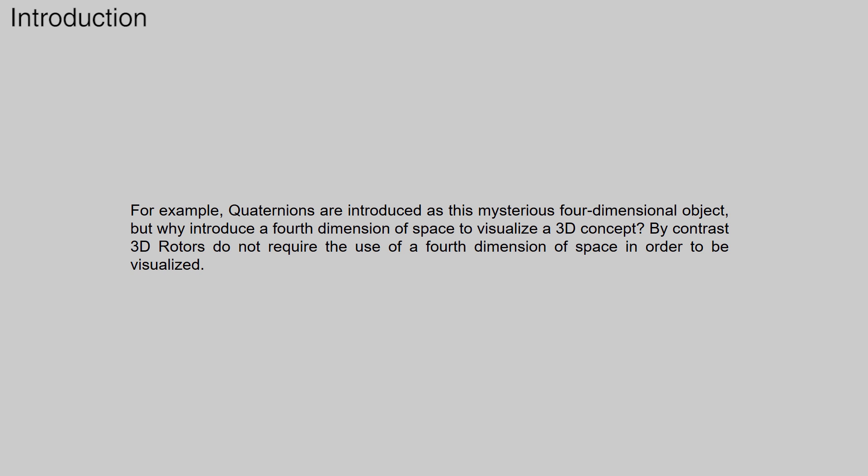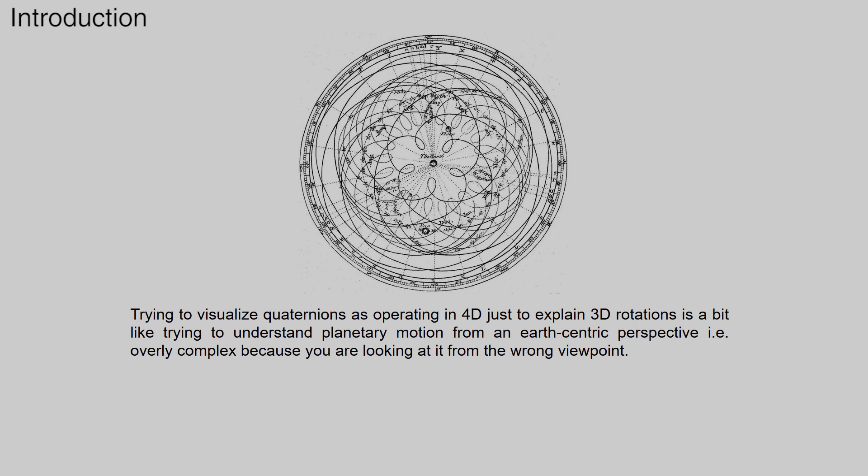For example, quaternions are introduced as this mysterious 4-dimensional object. They introduce a 4th dimension of space to visualize a 3D concept. By contrast, 3D rotors do not require the use of a 4th dimension of space in order to be visualized. Trying to visualize quaternions as operating in 4D just to explain 3D rotations is a bit like trying to understand planetary motion from an Earth-centric perspective, which becomes overly complex because you are looking at it from the wrong viewpoint.